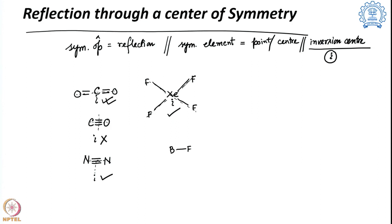For BF3, if a center of symmetry exists it must be on the boron atom. Going through that center in the opposite direction there is nothing. For each fluorine, reflecting through the imaginary center does not find another fluorine on the other side — so the reflection does not give a superimposable and indistinguishable form. Therefore, there is no center of symmetry present in BF3.